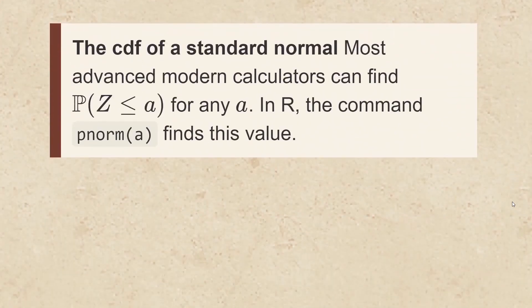Now most modern calculators can find the probability that z is less than a for any a. In R you use the command pnorm(a) in order to find that value.